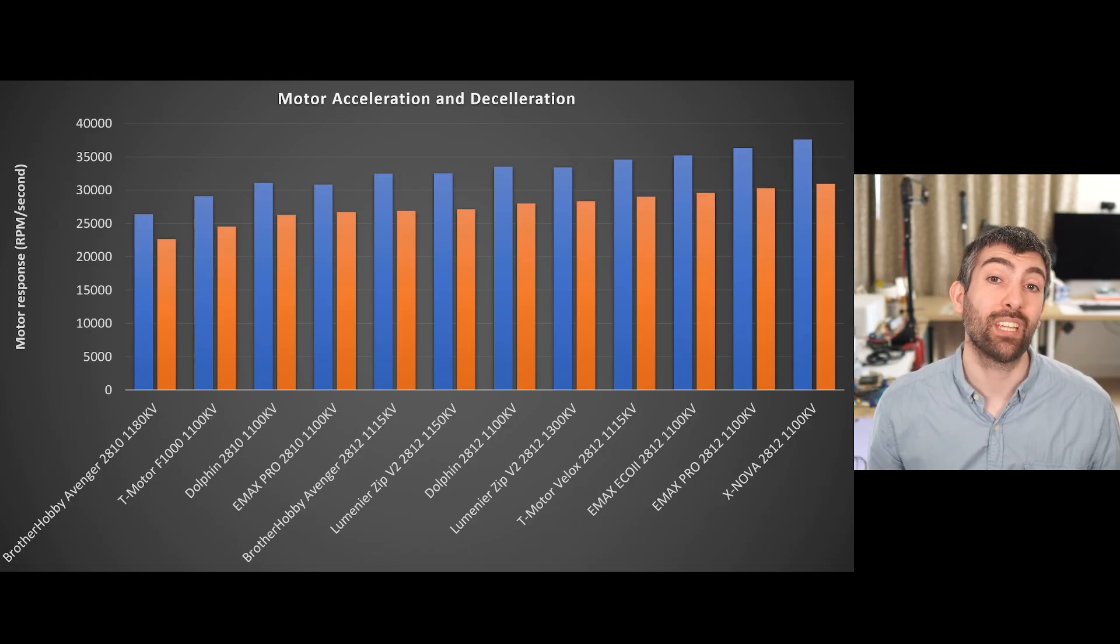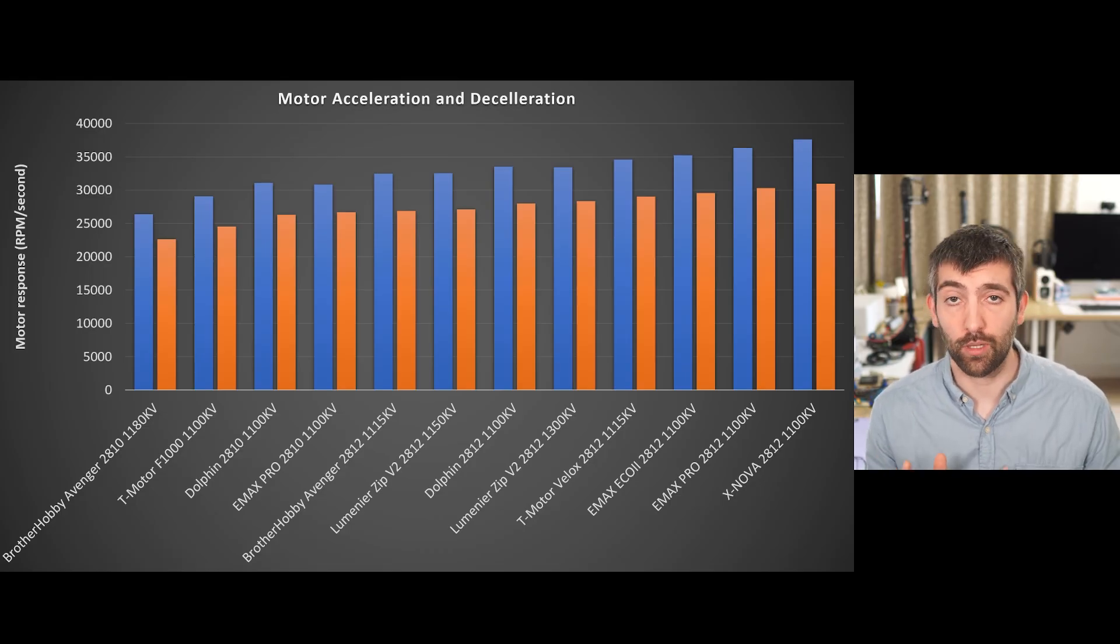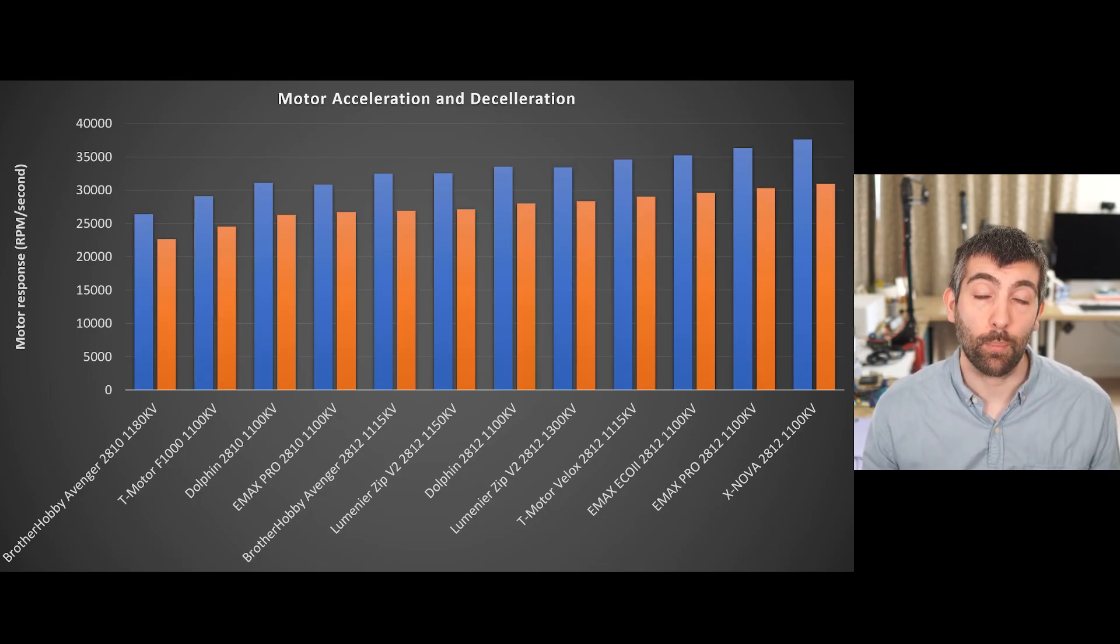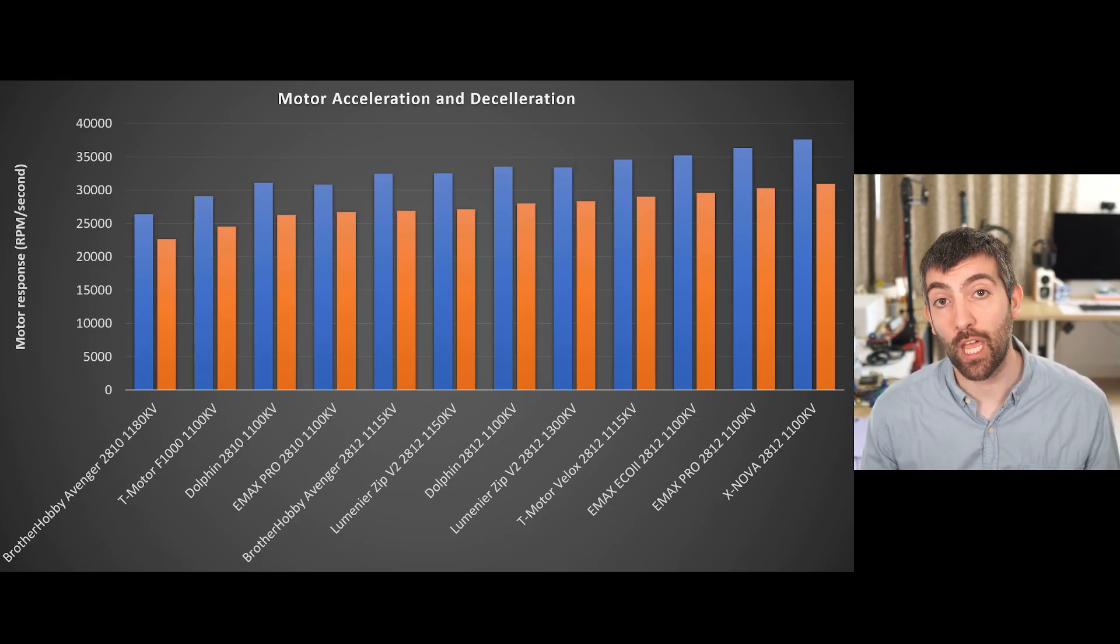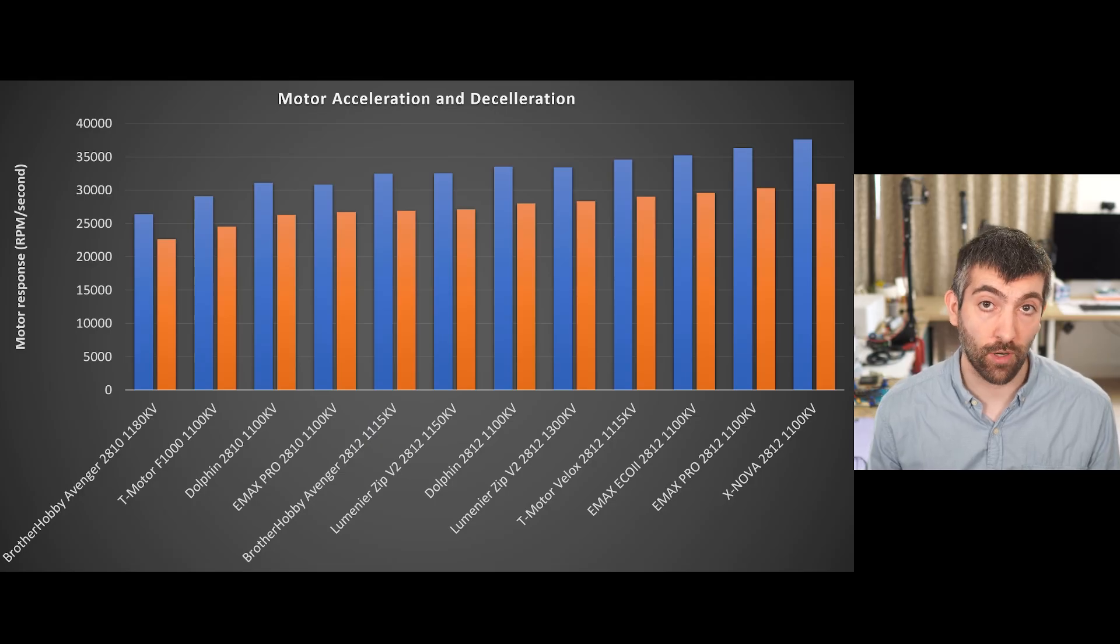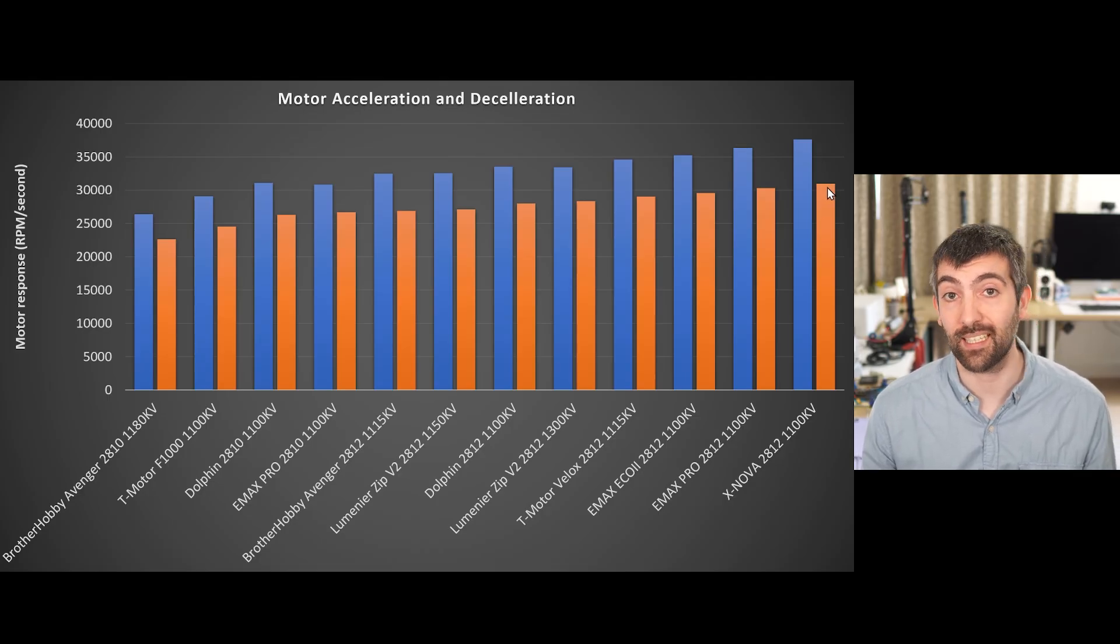The next test to look at is motor acceleration and deceleration. As you'll remember, we're stepping the prop from 10 to 50% throttle and back again and looking at how fast the motor can accelerate and decelerate the prop. The faster the motor can accelerate and decelerate the prop, the more responsive the motor is and the more stable the quad is going to be in the air. It'll be better able to adapt to turbulence or wind or sudden stick inputs, because it can change motor RPM and therefore thrust very quickly. The standout performer is the Xnova 2812. It comes at the top of this list, it is the fastest to accelerate and the fastest to decelerate.